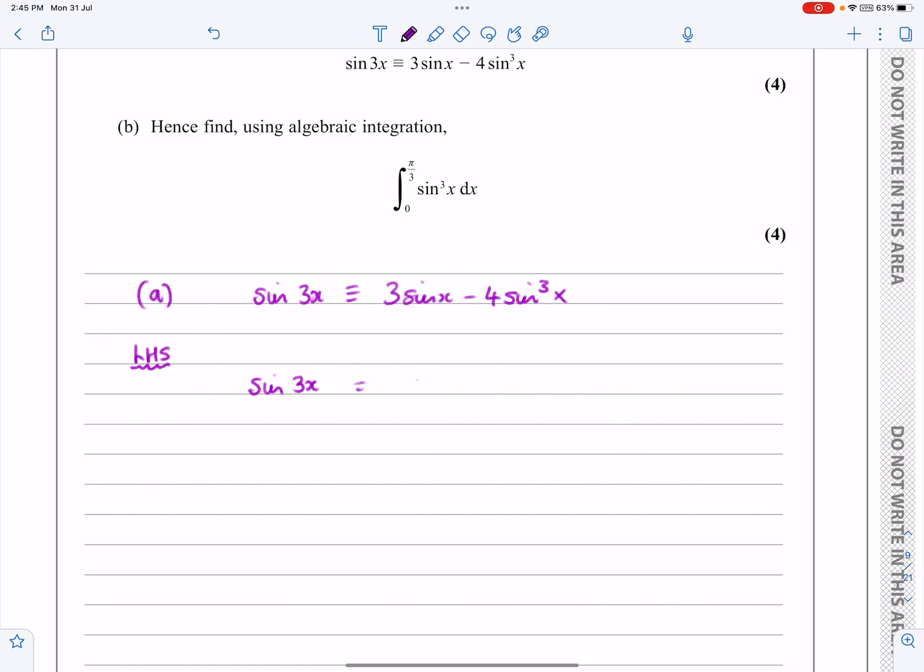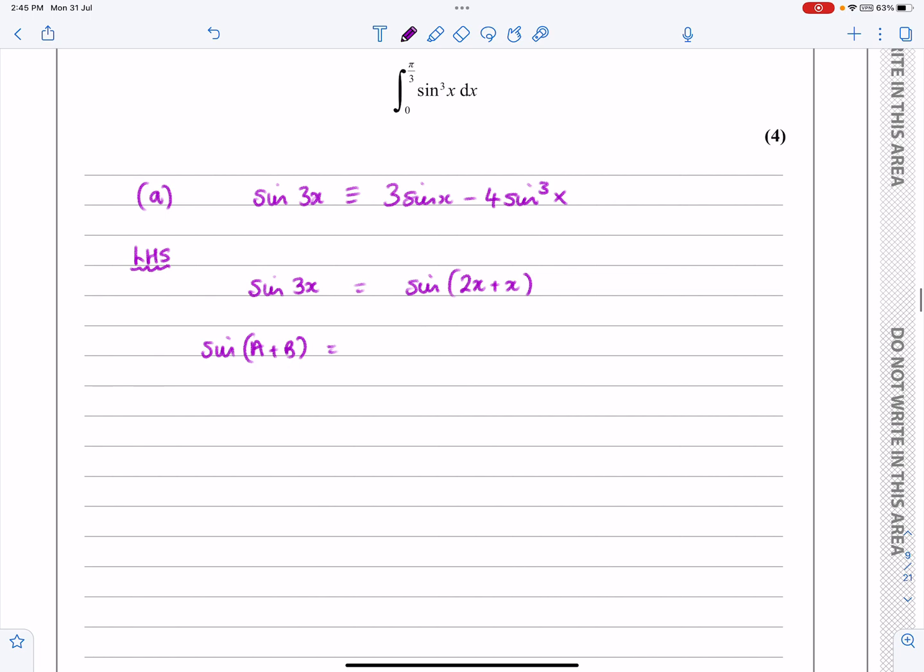That's the same as sine 2x plus x. Now I'm going to use the addition formula, sine A plus B. A lot of these are written down in the formula booklet, but I would suggest you try and learn as much as possible. This one is sine A cos B plus cos A sine B.